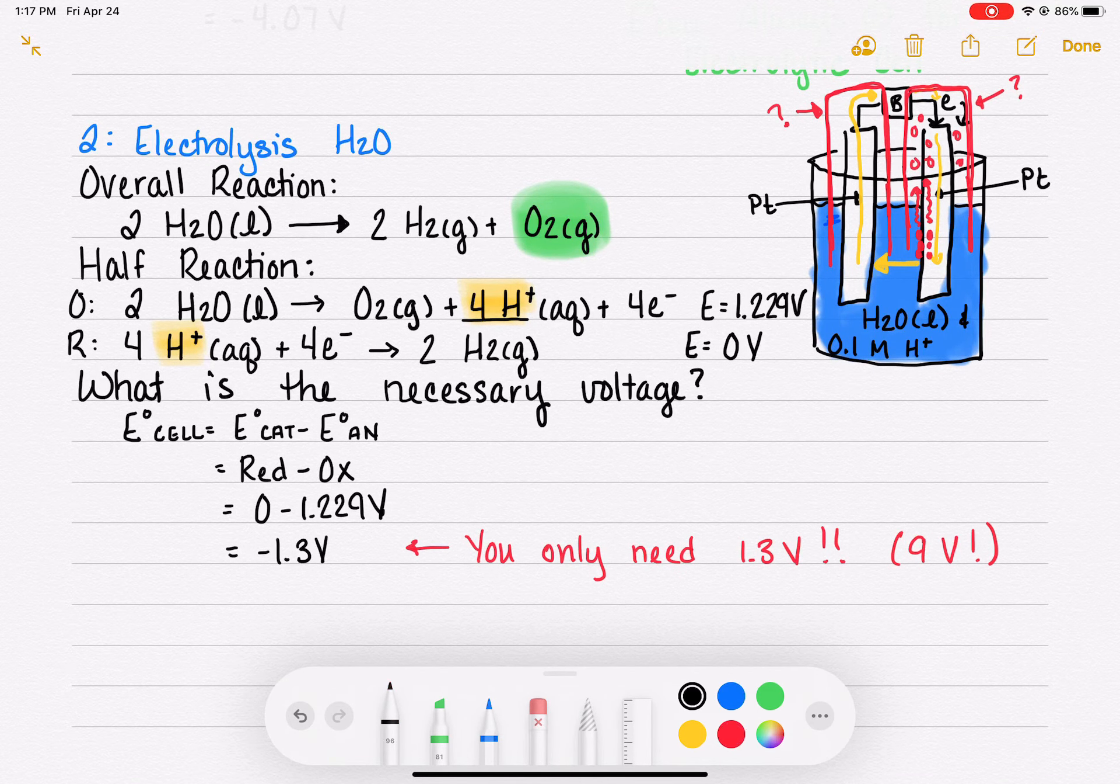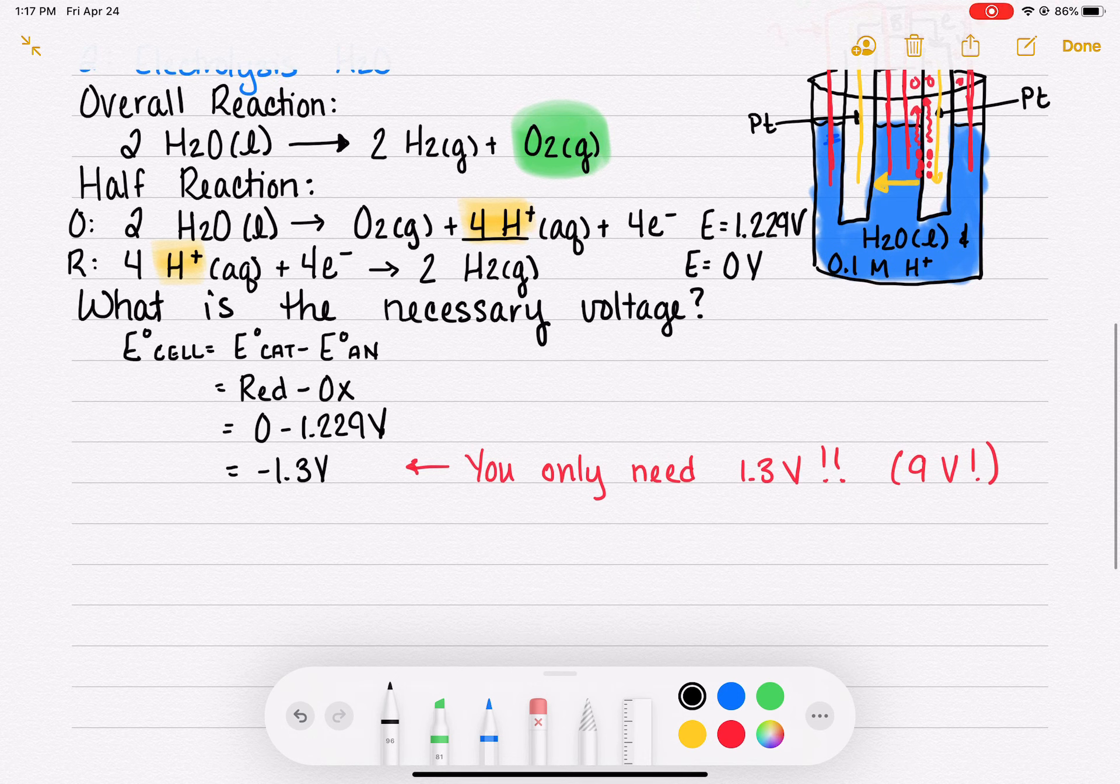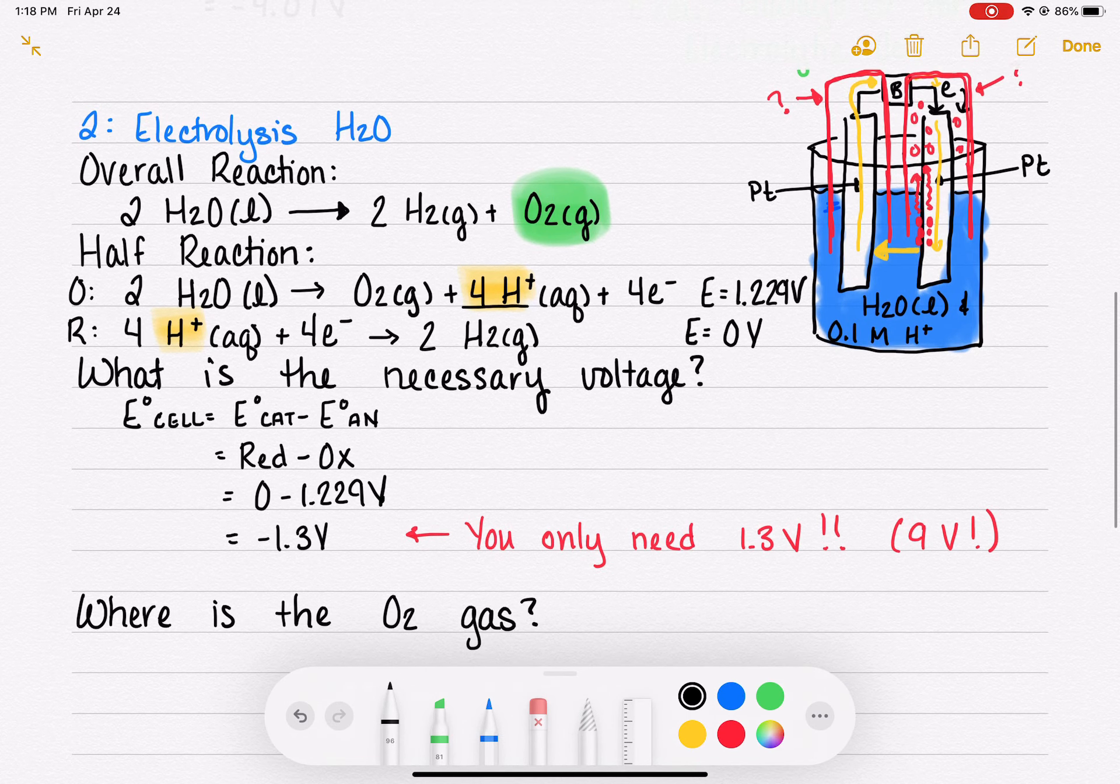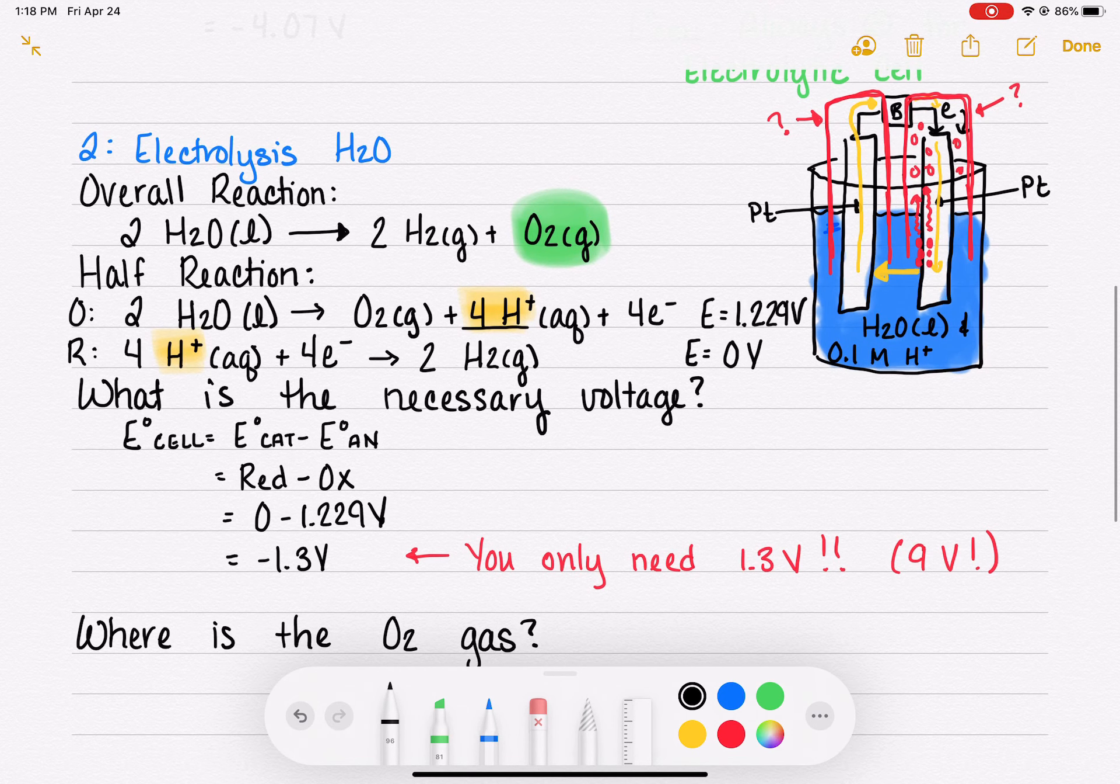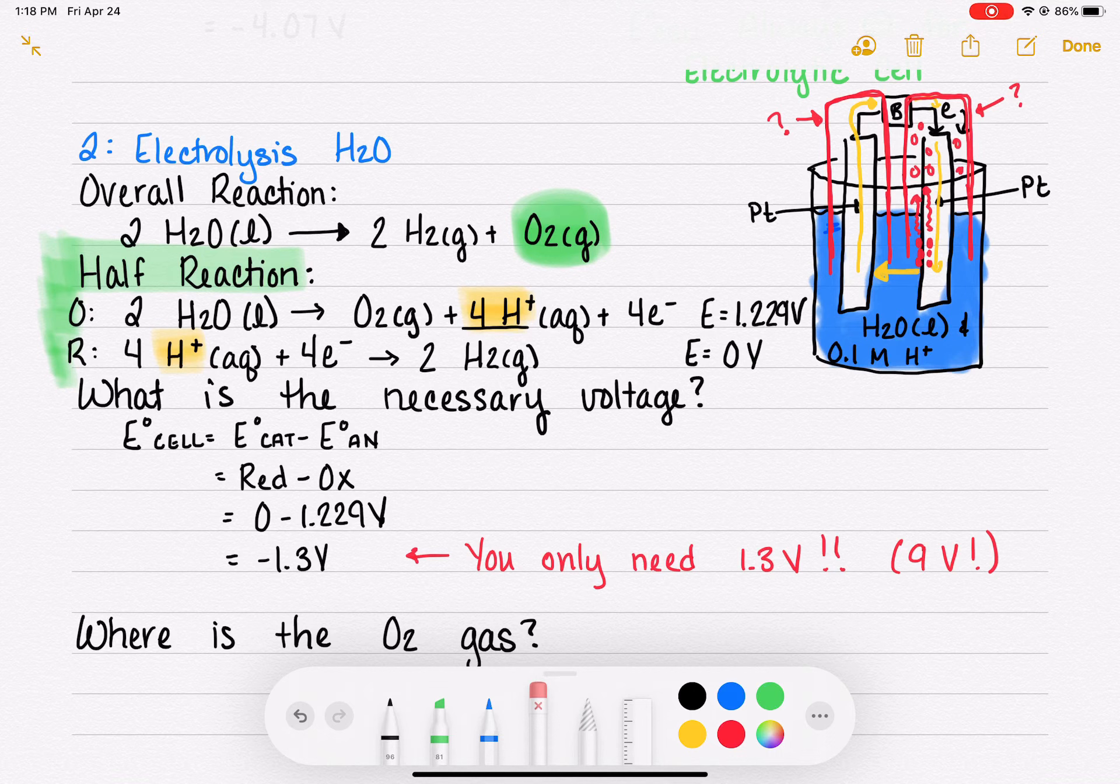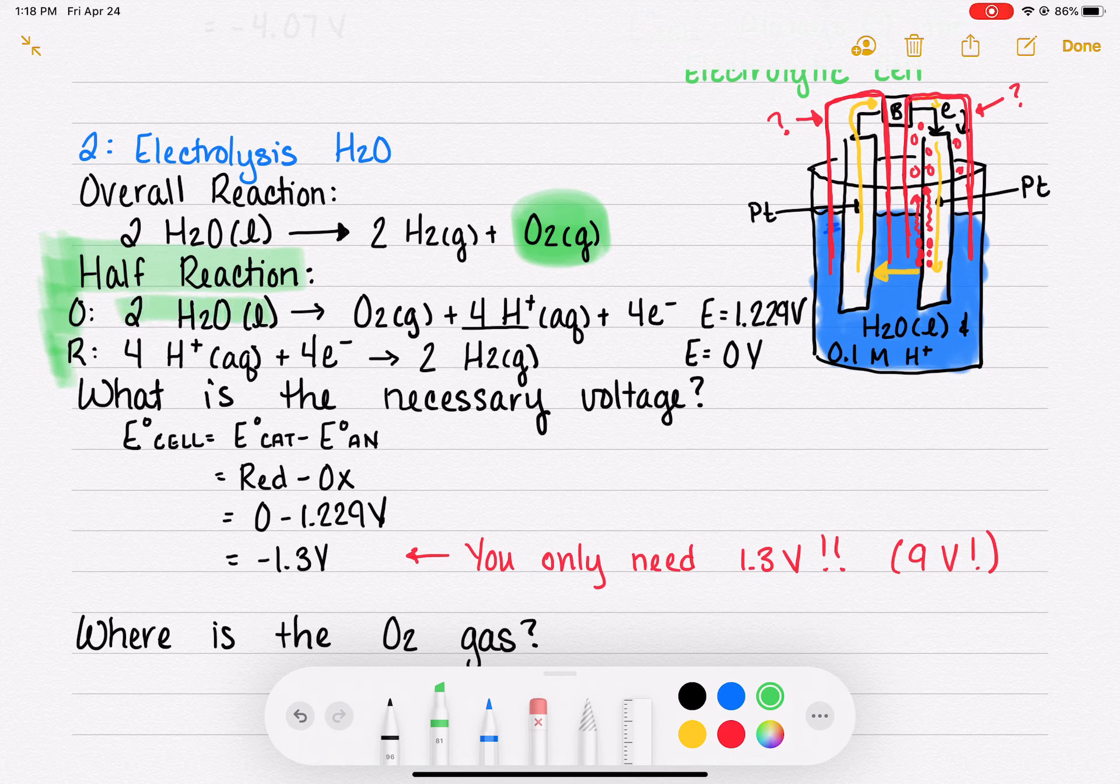Let's see how we could answer that question. Where is the O2 gas in this reaction? What we want to do to answer this question is go back up to our half reactions. We want to look at our half reactions and find the half reaction that is generating O2 gas. It looks like it's this guy right here. This is where the O2 gas is being generated.